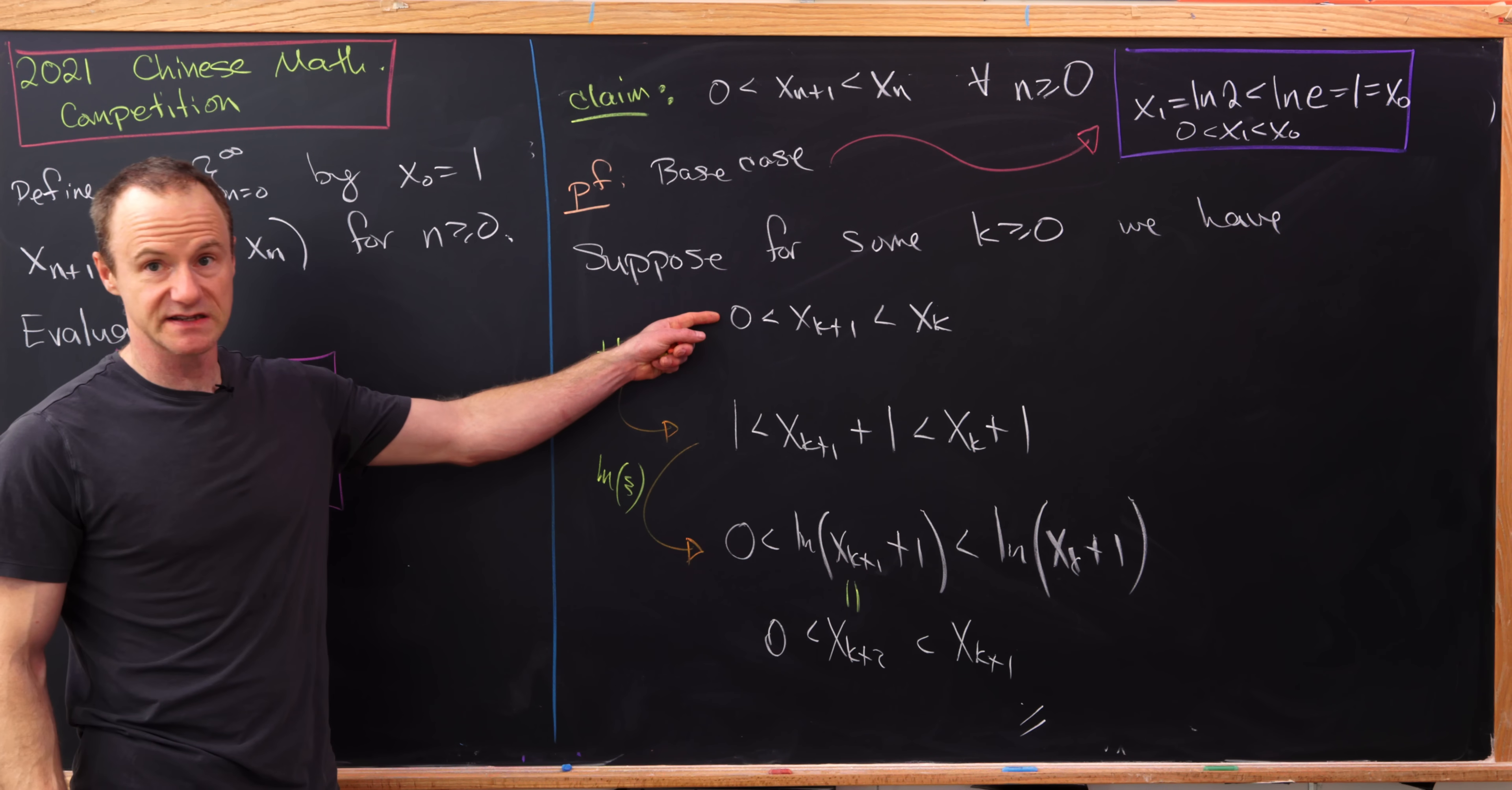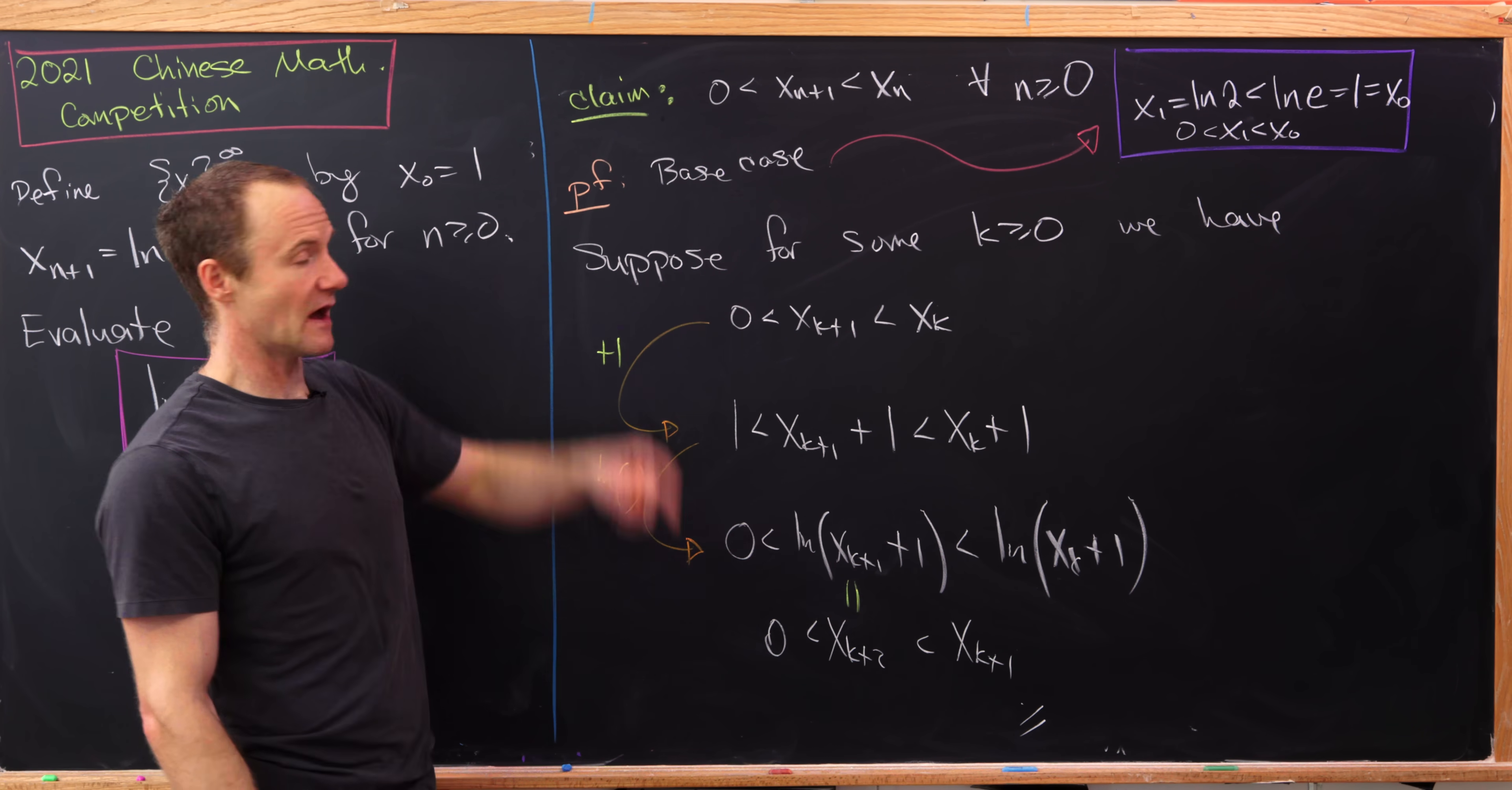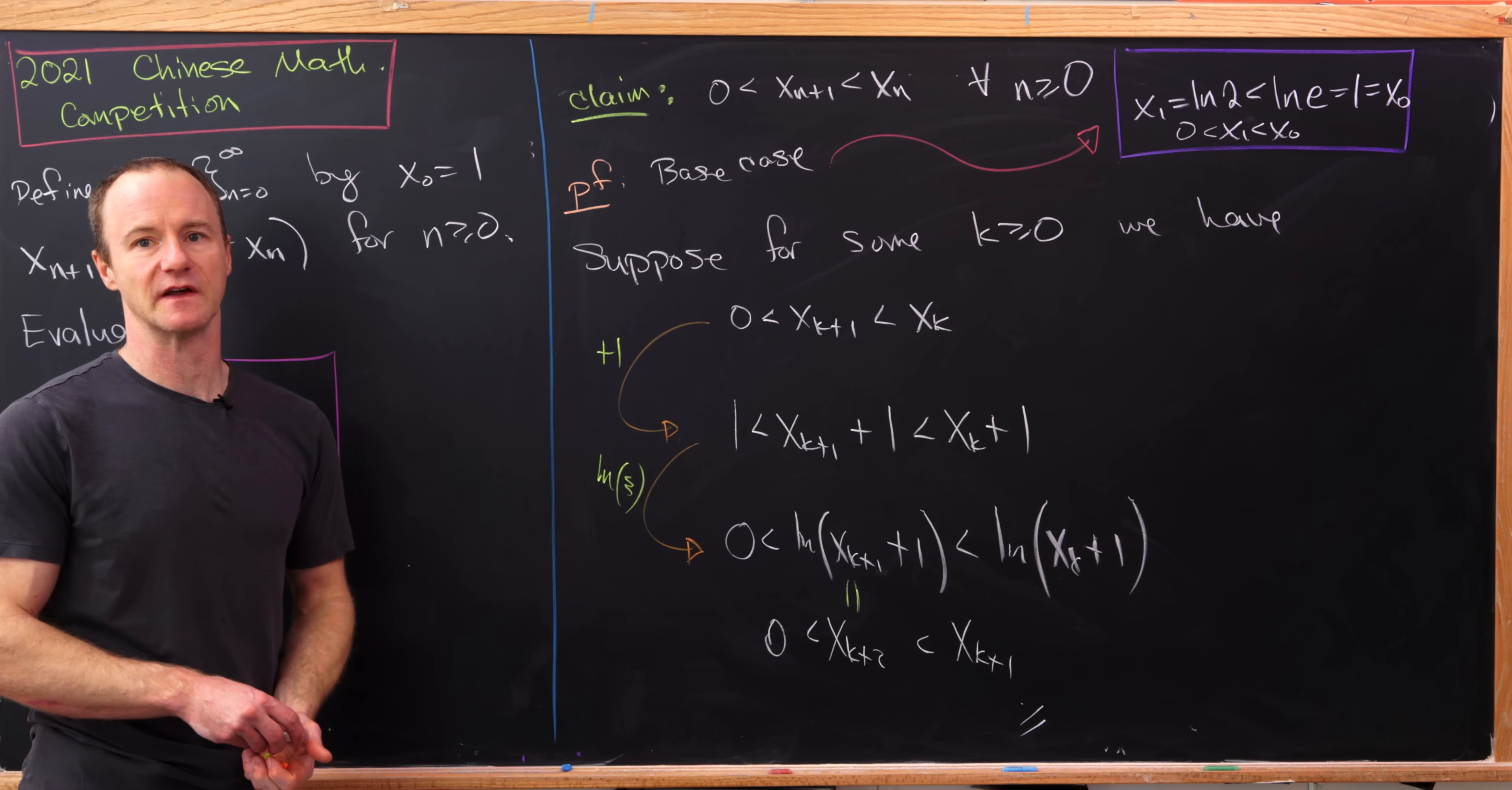So starting with this assumption and ending with this assumption, well that's exactly the induction step, which along with the base case confirms that we have a decreasing sequence that is bounded below by 0, which means this sequence has a limit. So now let's calculate that limit.